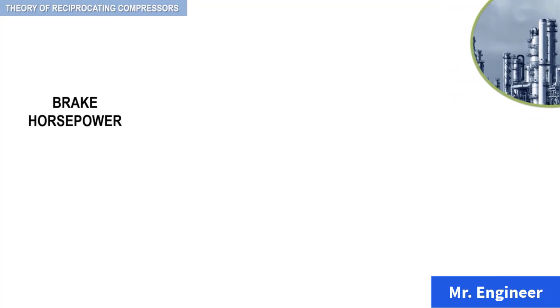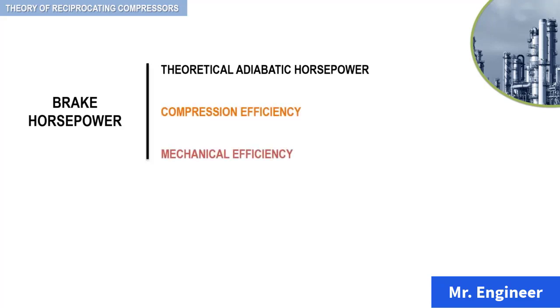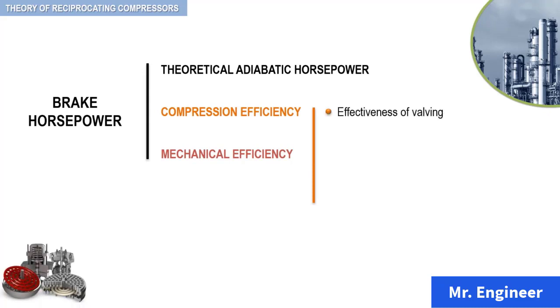Reciprocating compressors are calculated on the basis of theoretical adiabatic horsepower modified by compression and mechanical efficiencies which result in the brake horsepower. Compression efficiency depends on many factors such as effectiveness of valving, compression ratio, gas composition, and compressor size, just to name a few. Mechanical efficiency varies with machine type and size.